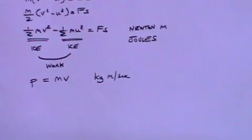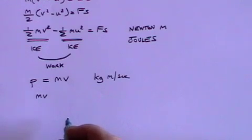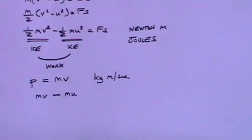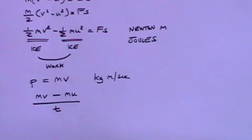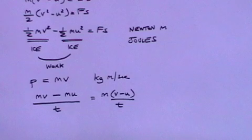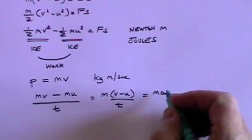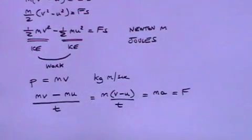What is the change in momentum? The change in momentum is the difference between the final momentum mv and the initial momentum mu. We need the rate of change of momentum, which is mv minus mu over t. That is simply m times (v minus u) over t. But v minus u over t is simply acceleration. So the rate of change of momentum is mass times acceleration, which from Newton's second law is force.